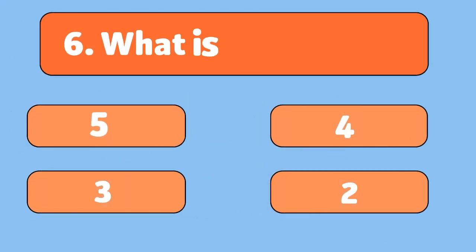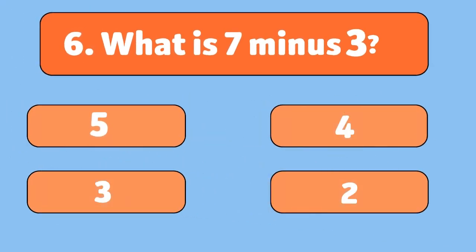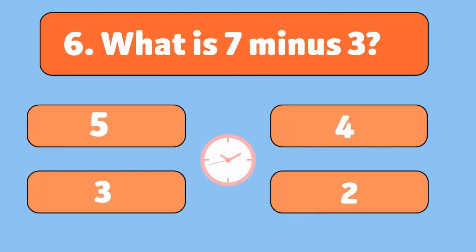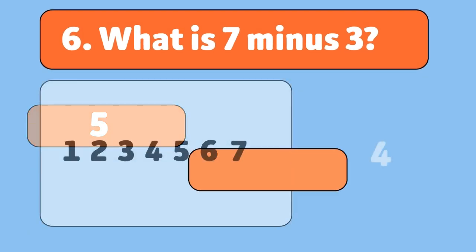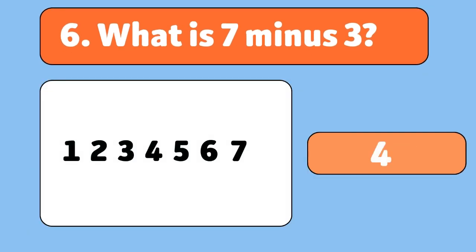What is seven minus three? Four. Start with seven and take three away, and we're left with four.